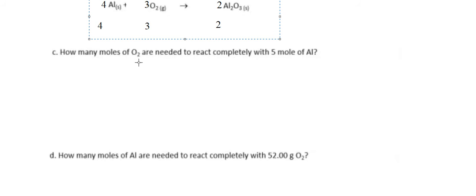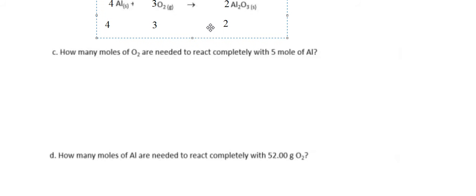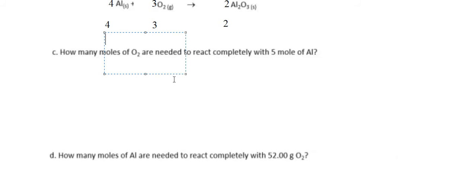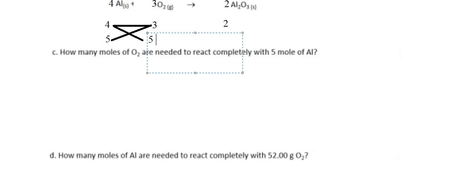Next question: how many moles of oxygen are needed to react completely with 5 moles of aluminum? They provide 5 moles of aluminum, so we put 5 here. We calculate 5 multiplied by 3 divided by 4. That gives 5 × 3 ÷ 4, which equals 3.75 moles of oxygen.